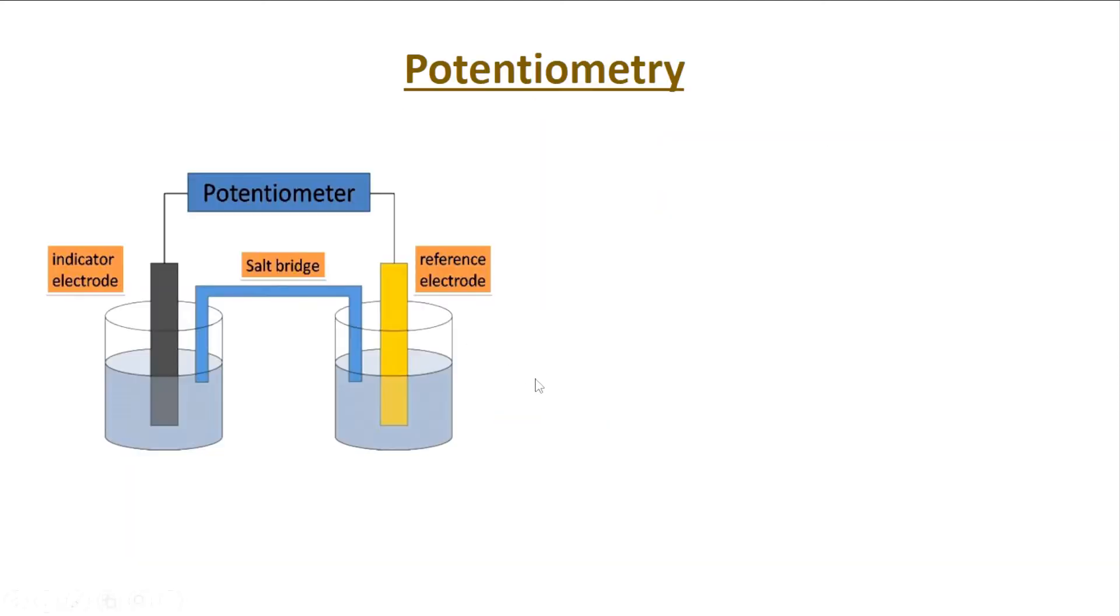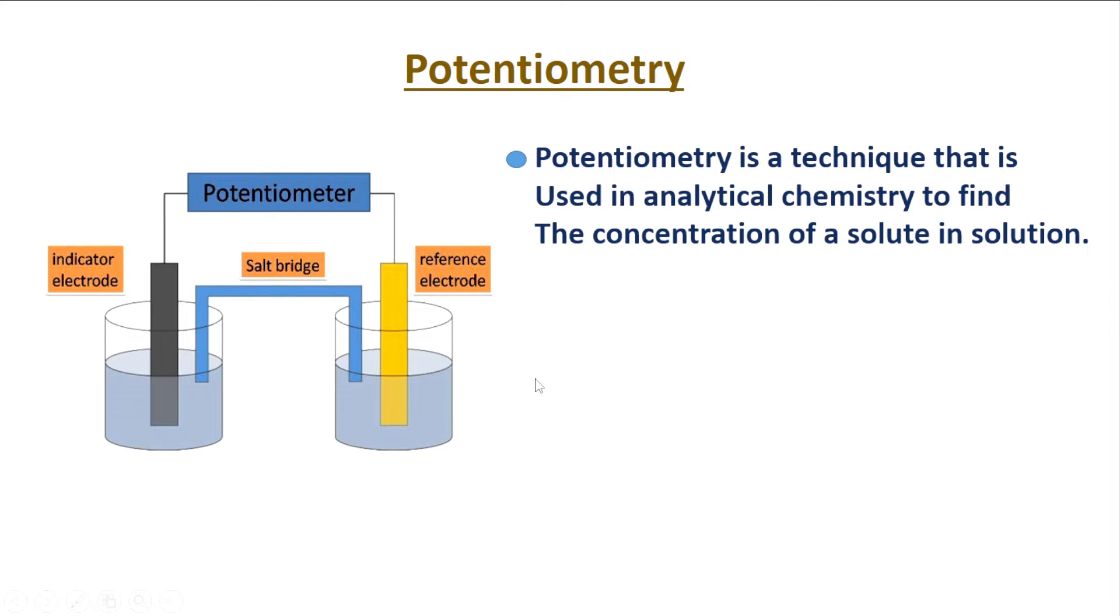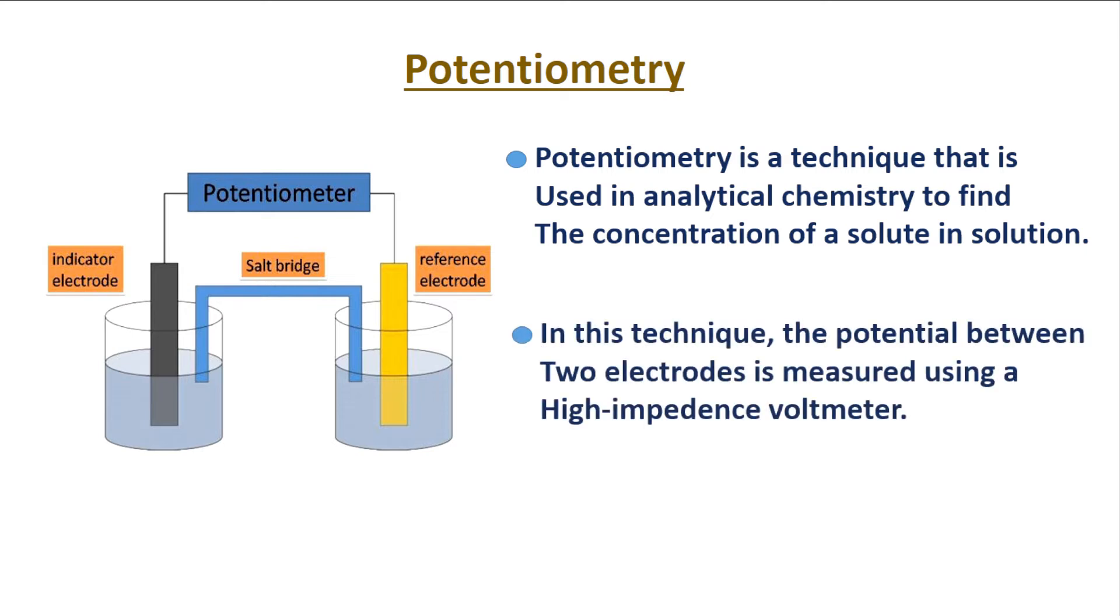Potentiometry is a technique used in analytical chemistry to find the concentration of a solute in solution. In this technique, the potential between two electrodes is measured using a high impedance voltmeter.